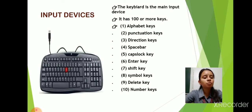The main input device is Keyboard. Keyboard has 100 or more keys. Different types of keys are: Alphabet keys, Punctuation keys, Direction keys, Space bar, Caps Lock key, Enter key, Shift key, Symbol keys, Delete key, and Number keys. Now for further information we will see the video of extra marks.